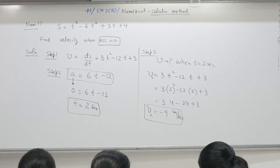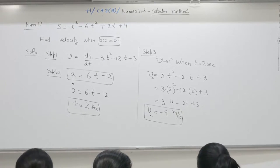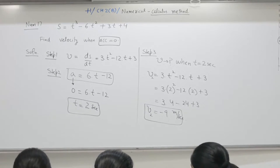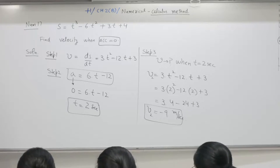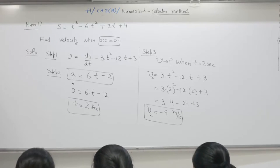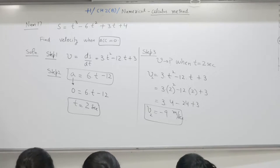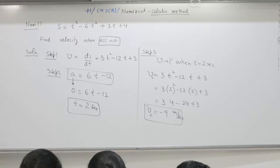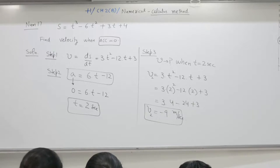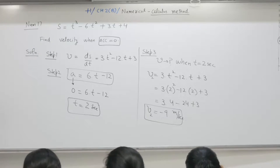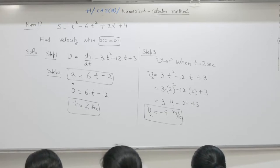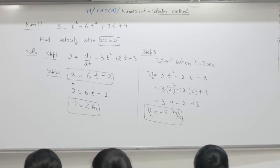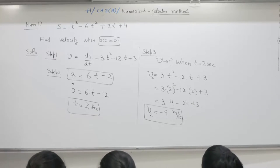Mark this as an important numerical because it gives thorough understanding of s, v, and a — three parameters. Chapter 2D deals with displacement, velocity, and acceleration, whether it be 2a, 2b, 2c, or 2d. Numerical number 18.